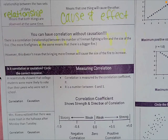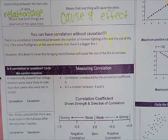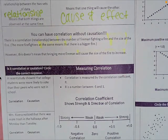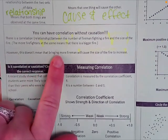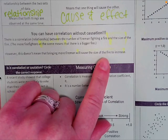You can have correlation without causation. For example, there's a correlation between the number of firefighters at a fire and the size of the fire — more firefighters means a bigger fire. Does one cause the other? Actually, the opposite is true: a bigger fire causes more firefighters to be called in. But bringing more firefighters does not cause the fire to increase.